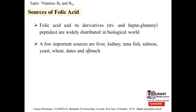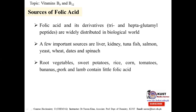Some important sources of folic acid are liver, kidney, tuna fish, salmon fish, yeast, wheat, dates, and spinach. Like other B-complex vitamins, they are present in these sources, especially the liver. Root vegetables, sweet potatoes, rice, corn, tomatoes, bananas, pork, and lamb also contain folic acid, though they are not considered rich sources.